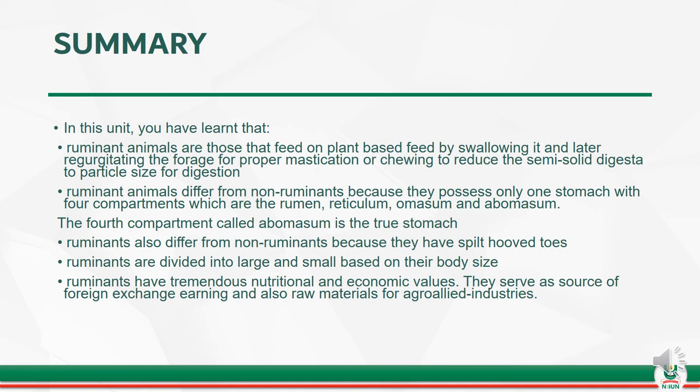Ruminant animals differ from non-ruminants because they possess only one stomach with four compartments, which are the rumen, reticulum, omasum, and abomasum. The fourth compartment, called the abomasum, is the true stomach. Ruminants also differ from non-ruminants because they have split-hoofed toes. Ruminants are divided into large and small based on their body size. Ruminants have tremendous nutritional and economic values, and serve as a source of foreign exchange earnings and also raw materials for agro-allied industries.